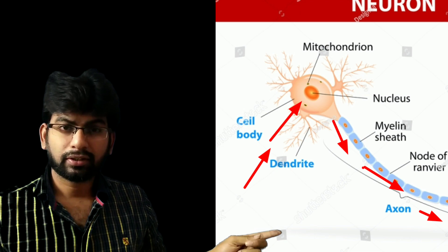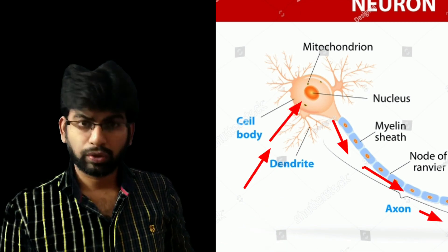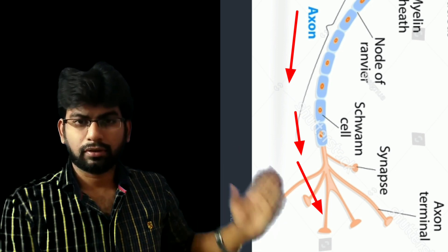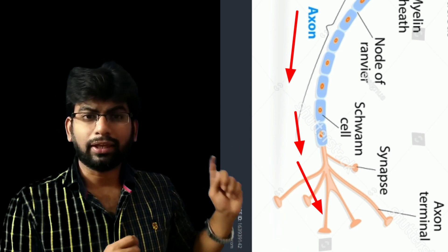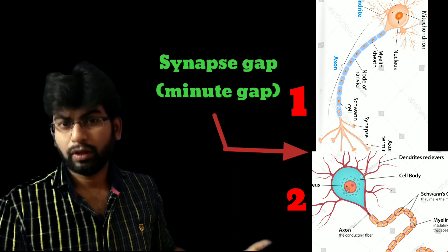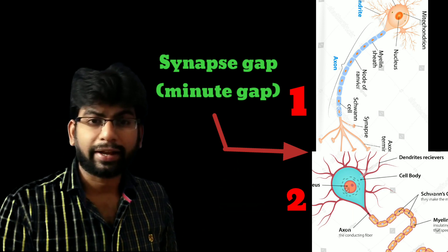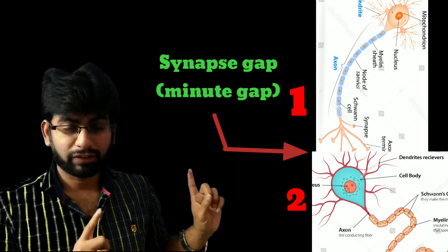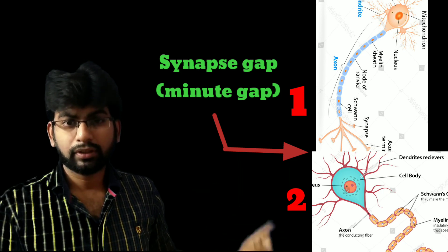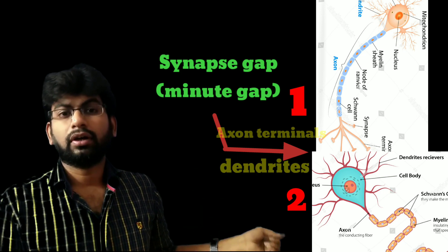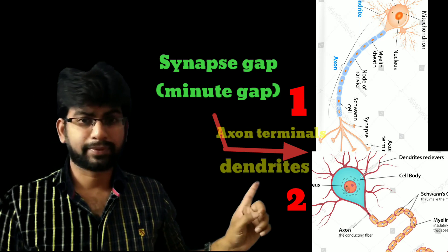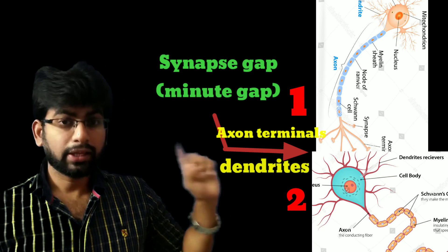The message travels from dendrites to the cell body, from the cell body to the axon, and from the axon to the axon terminals. The axon terminals are attached to the next nerve cell's dendrites — through the synapse.